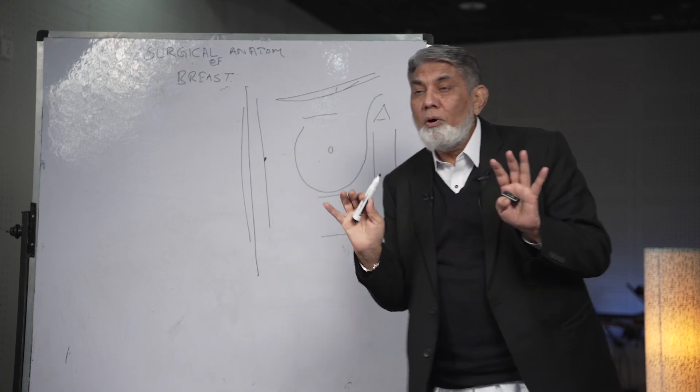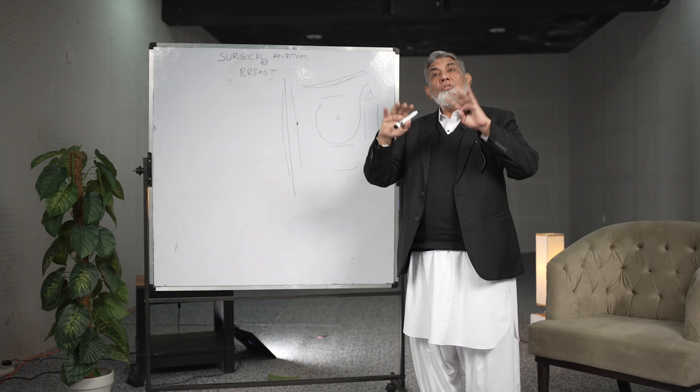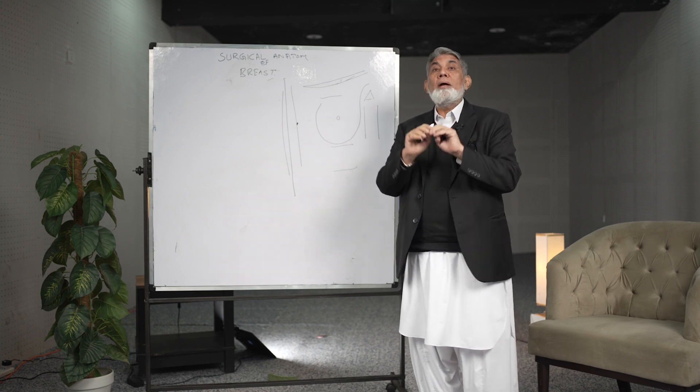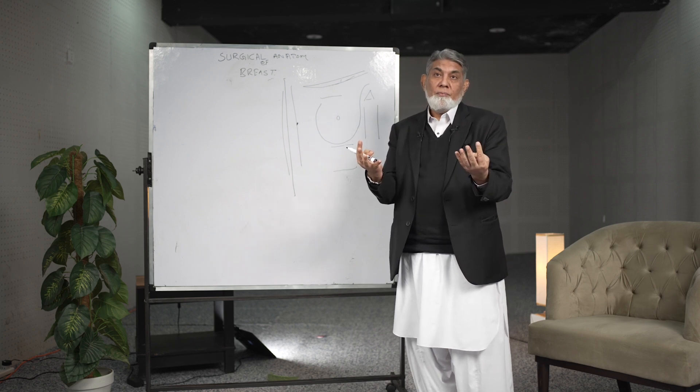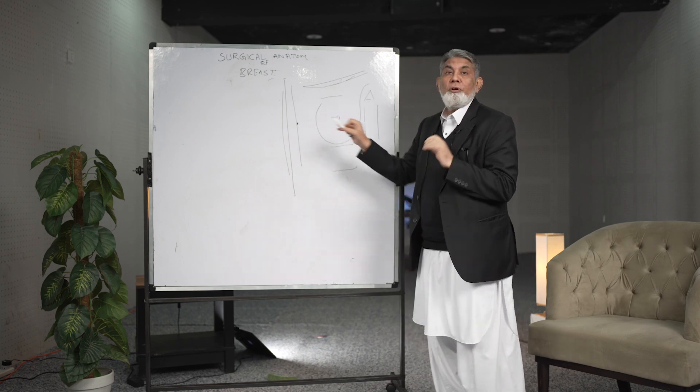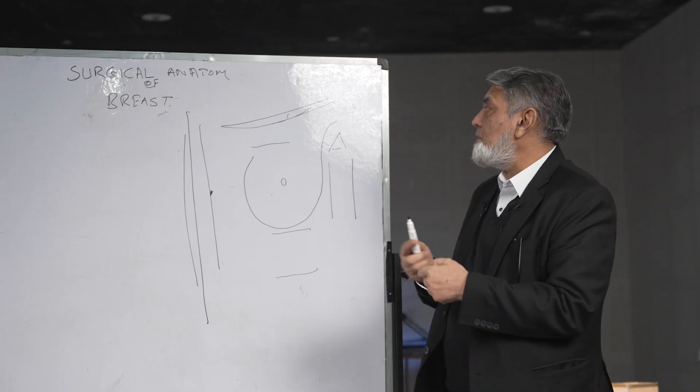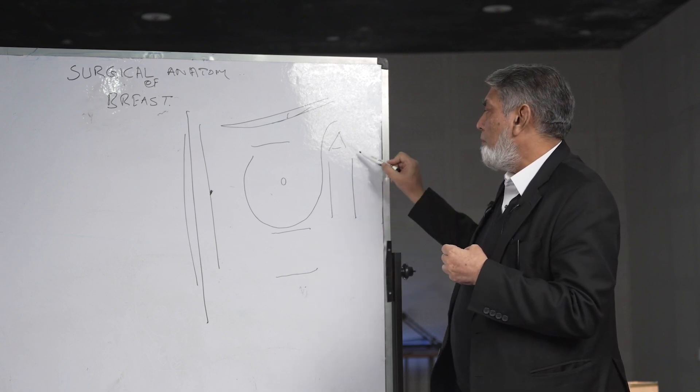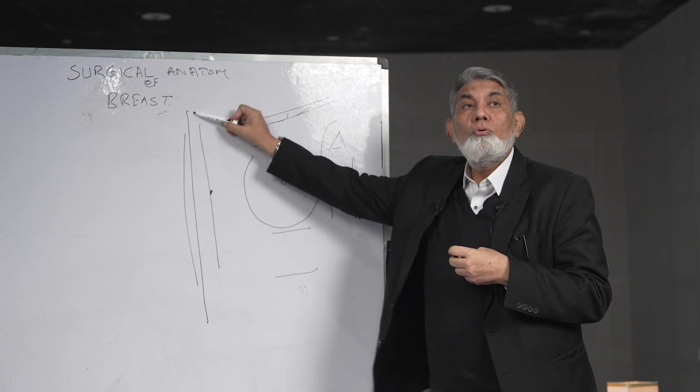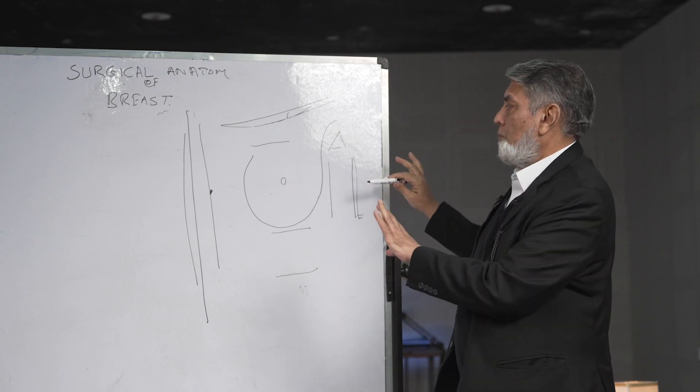Now this point is very important to understand because when you are going to do breast surgery you have to do a complete clearance. So the real extent of removal of the breast is not just the protuberant part of the breast but the breast starts from clavicle to eighth rib from mid axillary line to the mid sternal line. So this is the gross part of the breast.